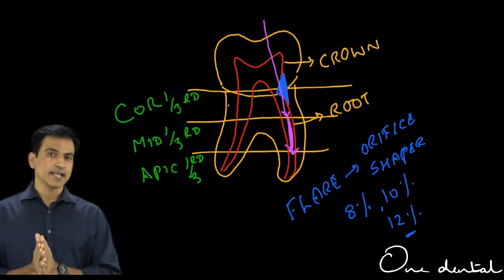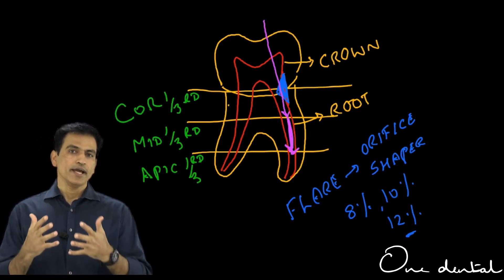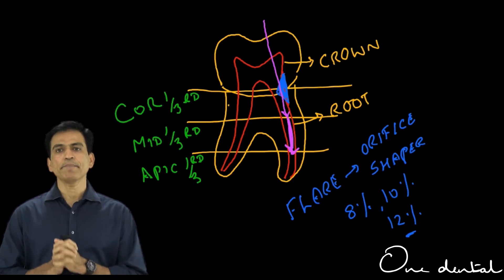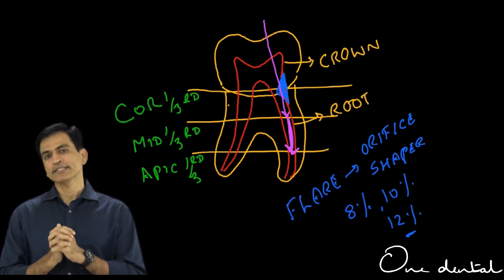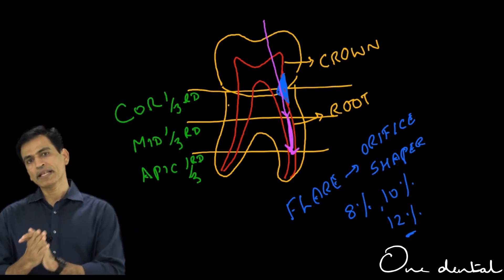Once the coronal flare is done, the entry point is easy. To see the next step, you need to use a hand file, a number 10 file, a glide path file to stepwise enter with a watch winding motion or a balance force to go to the middle third.